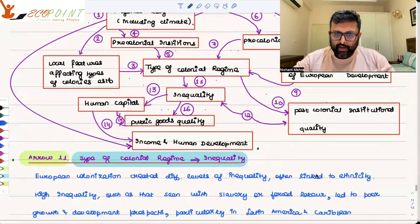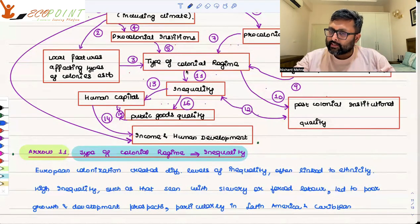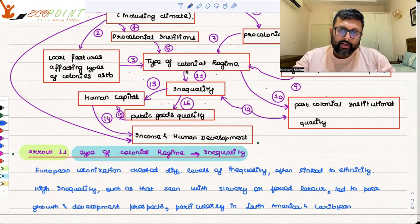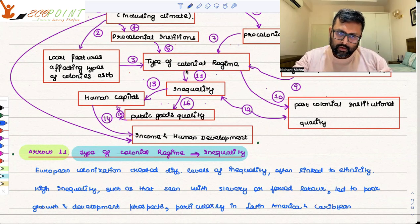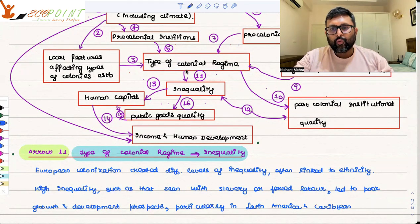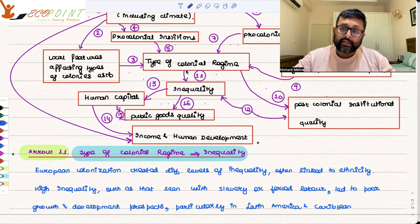Arrow eleven: how the colonial regime affected inequality. Look at the cases of Latin America and the Caribbean — where Spanish colonizers became very rich and the indigenous population was very poor. Discrimination was based on ethnicity. There was huge inequality between Spanish colonizers and the indigenous population because colonizers could use the indigenous population as slaves. Slaves had no bargaining power; they had to do what their masters said. There was hardly any growth or human development.